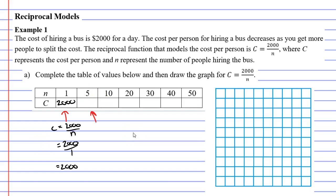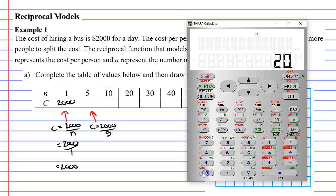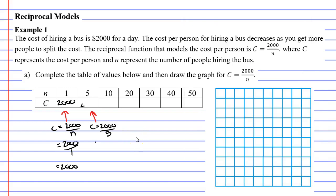Moving on to the next column, this time n is 5. So c equals 2,000 over 5. Bringing up our calculator, 2,000 divided by 5 gives us 400. So if only 5 people catch the bus, it's going to cost them $400 each. I'm going to pause the video and complete this table of values — I'd like you to do the same and then check if you get the same answers as me.